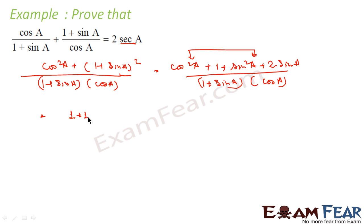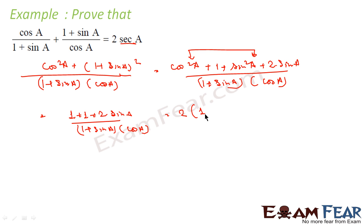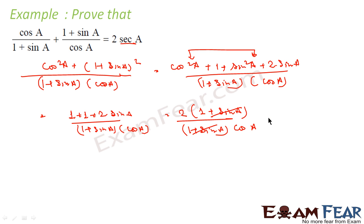So we have (2 + 2 sin A) / [(1 + sin A)·cos A]. Taking 2 common from the numerator gives 2(1 + sin A) / [(1 + sin A)·cos A]. The (1 + sin A) cancels, leaving 2/cos A, which is 2 sec A. We made sure to get 2 common in the numerator and then it cancelled to give the answer.